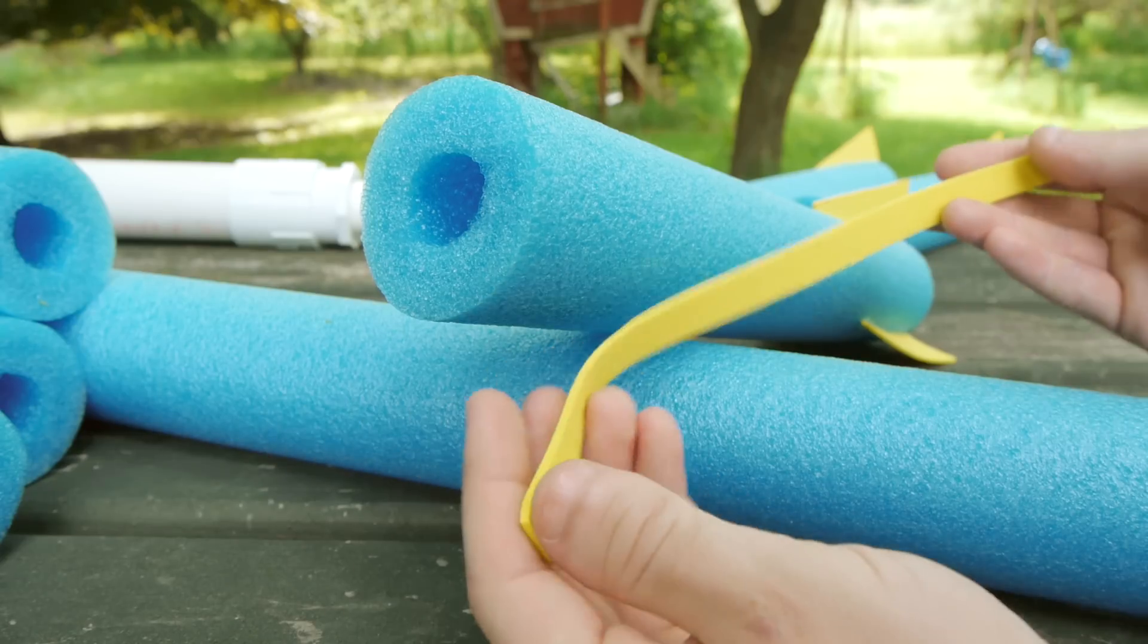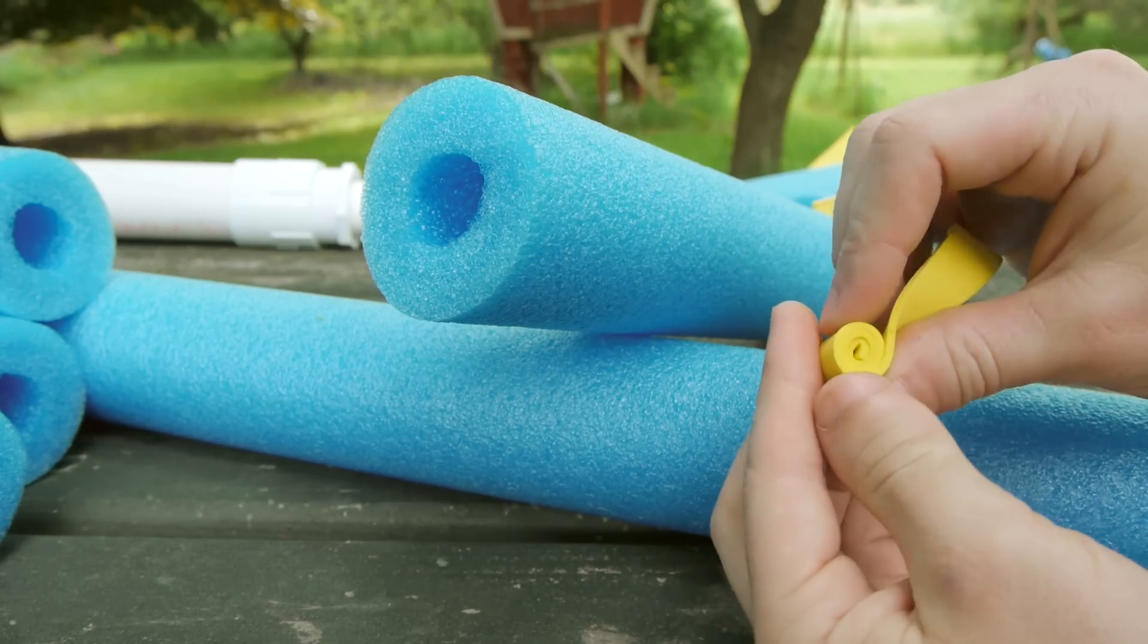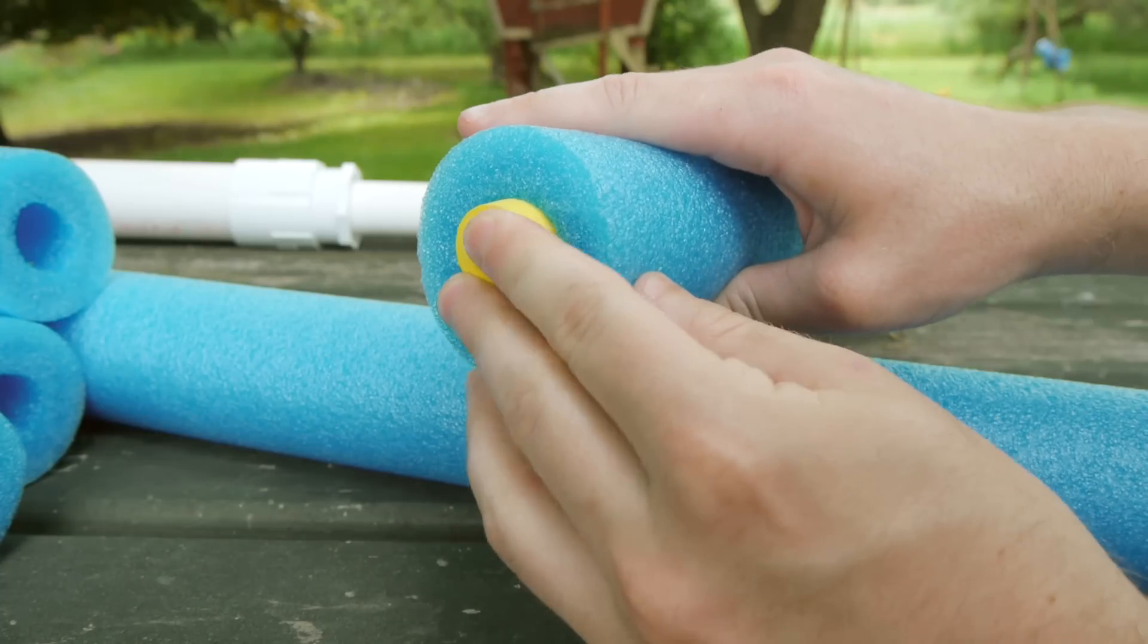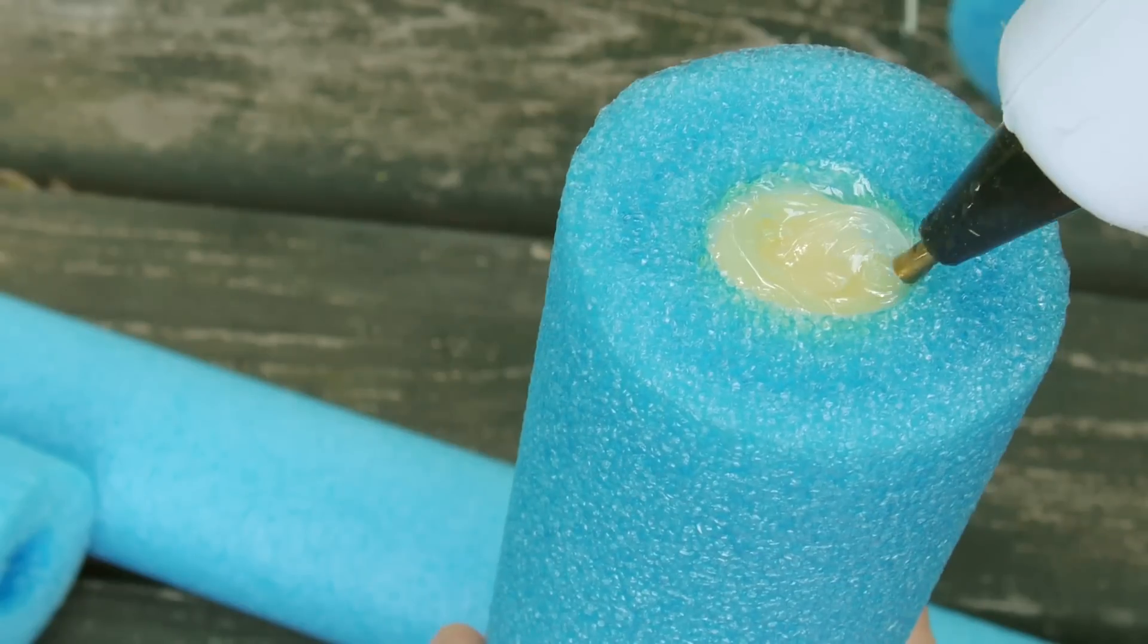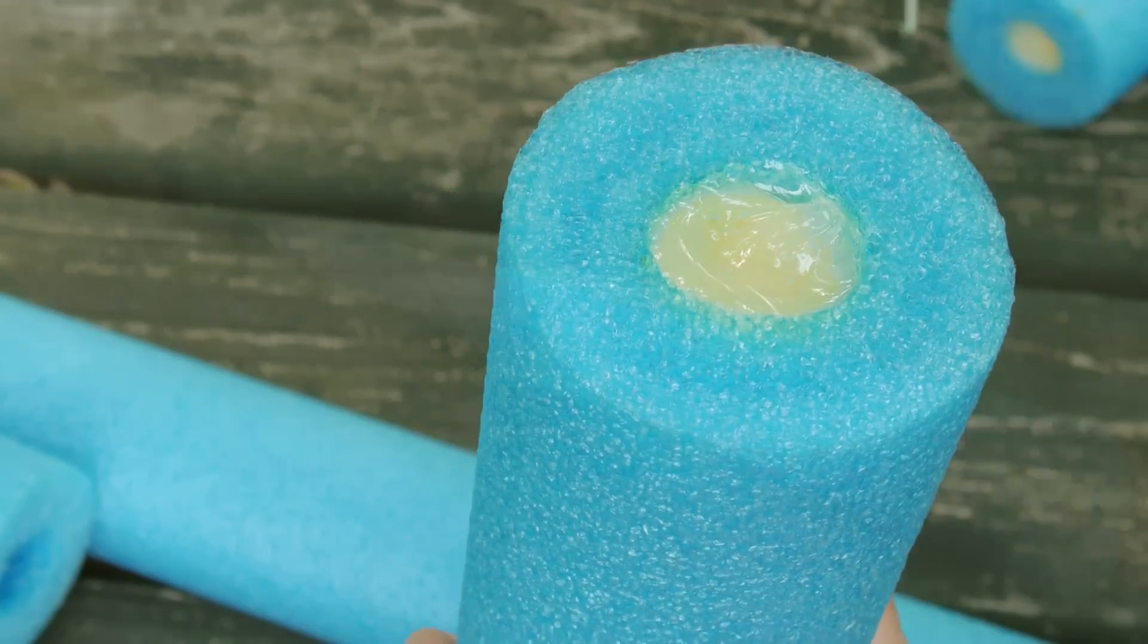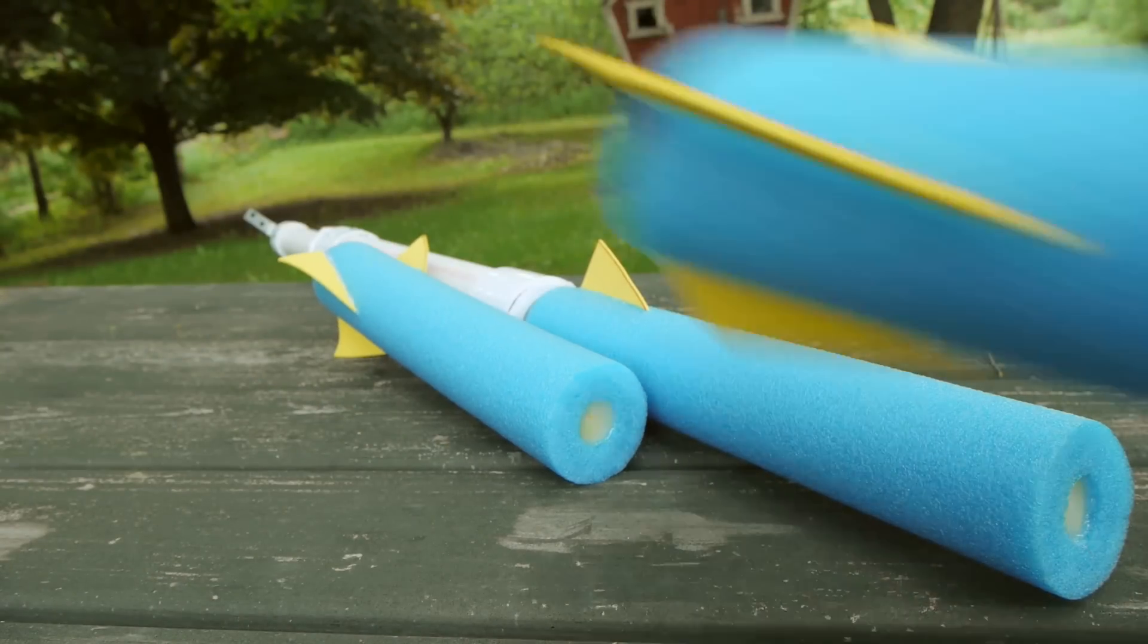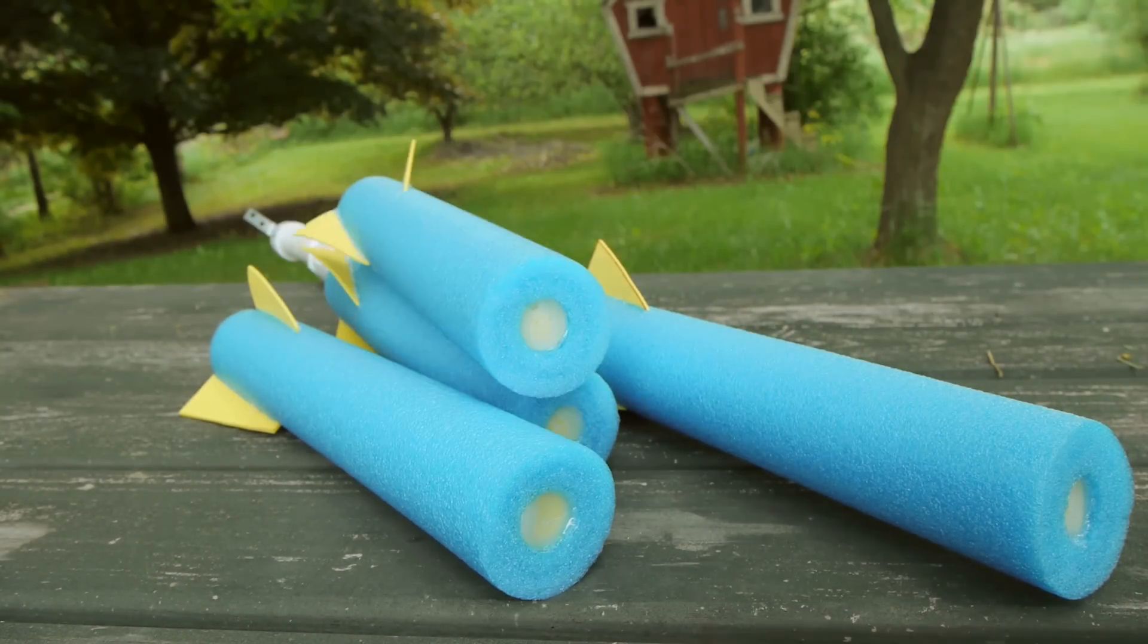Now to close the nose end of the rocket, a strip of foam is rolled tightly into a cylinder and pressed in as a plug, which is then hot glued in place. It doesn't take long to make a lot of rockets this way, and you can soon be well equipped to rule the neighborhood.